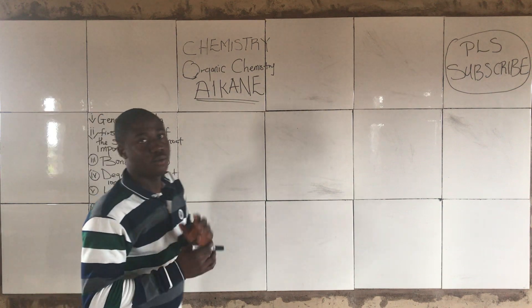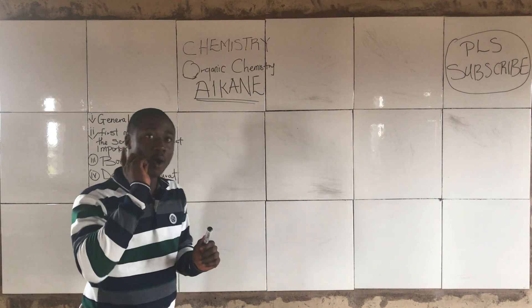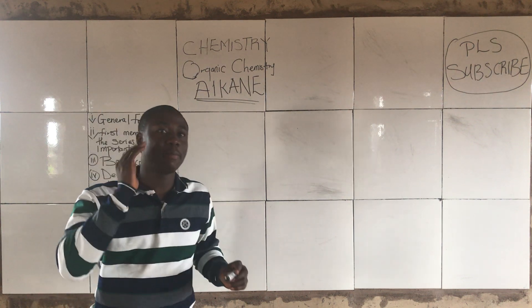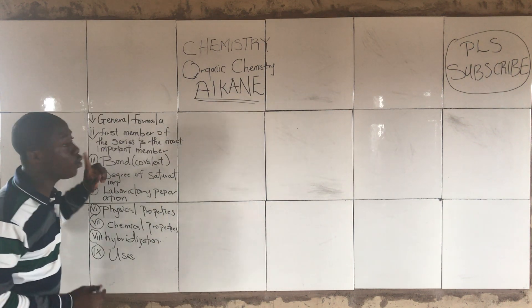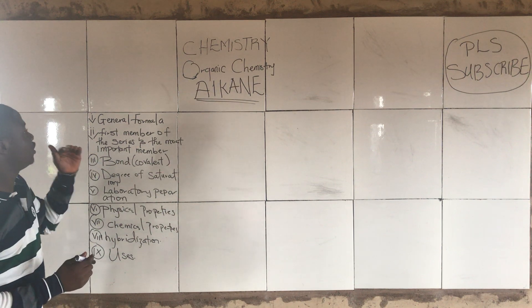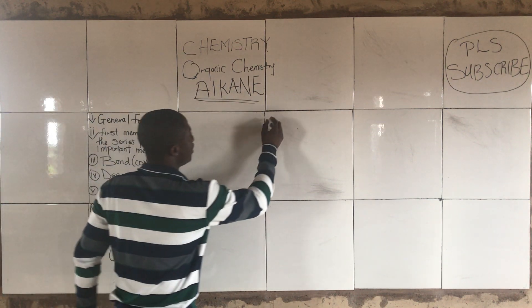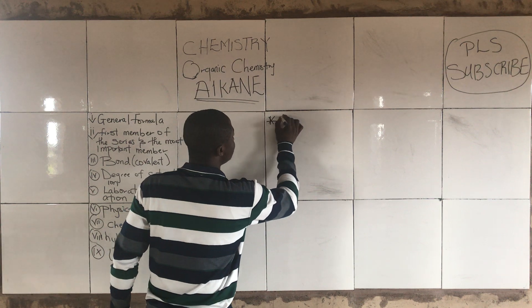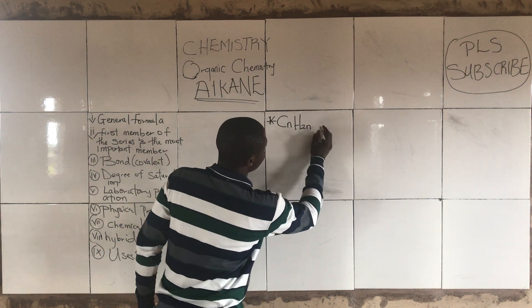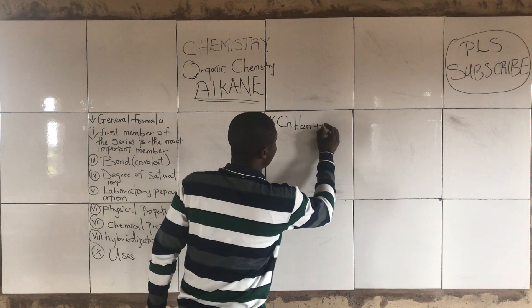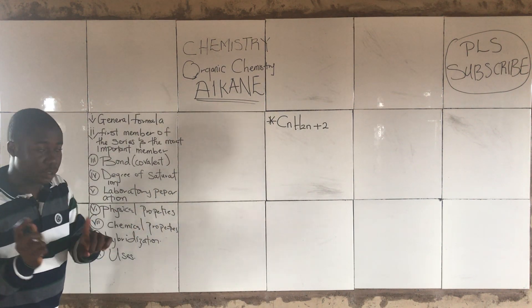Today we are going to talk about alkanes. Alkanes are also called paraffins. The general formula for alkanes is CₙH₂ₙ₊₂. This is the general formula for alkanes.